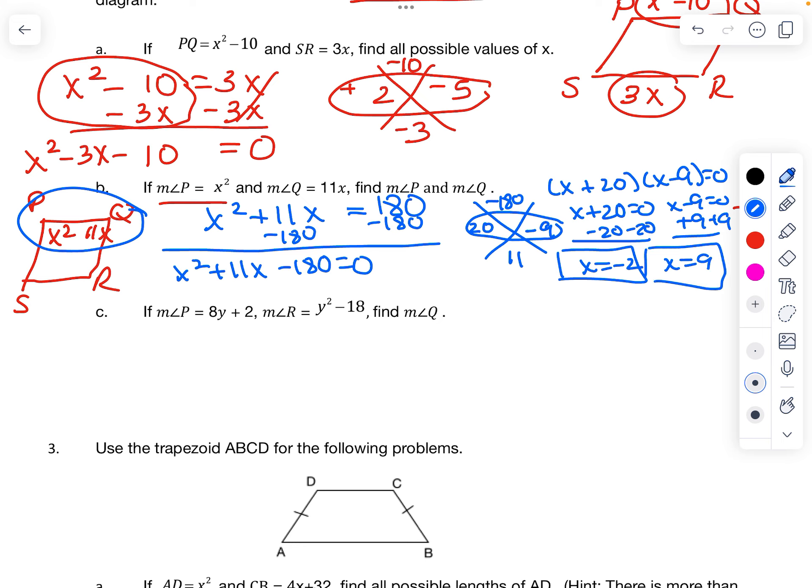So there's two x's, but look at the question. It's not asking you to find the x's. It wants you to find the measures of the angles. Let's start with measure of angle P. Measure of angle P is going to be x squared. So if I take the number and square it.